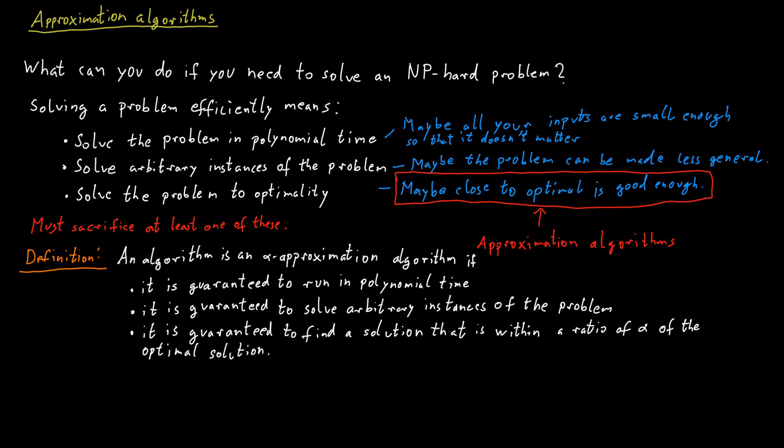So for example, suppose you want to find a maximum independent set in a graph. Now if you have a two approximation algorithm for this problem, and if the maximum independent set in the graph has size 100, then the two approximation algorithm should give you an independent set of size at least 50.